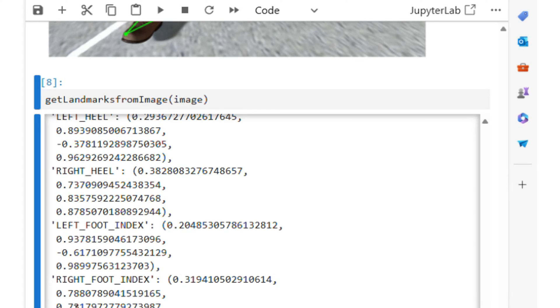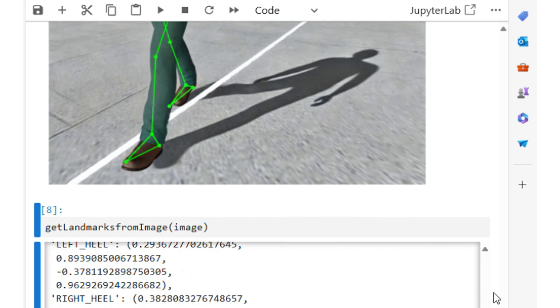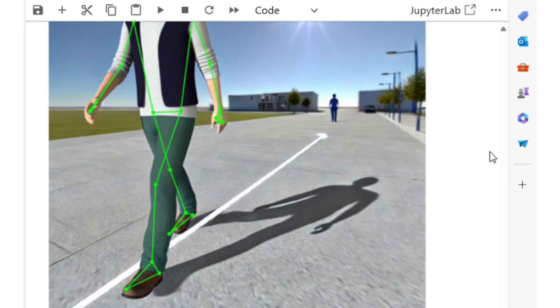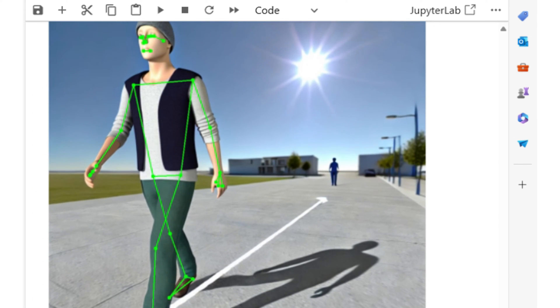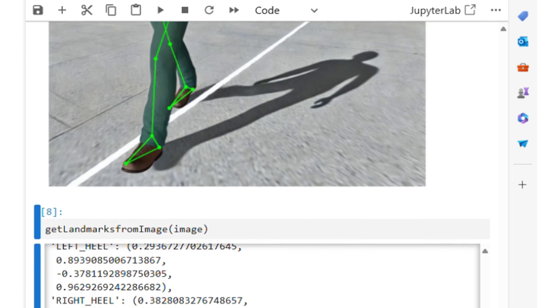The smaller the z value, the closer the landmark is to the camera. The magnitude of z uses roughly the same scale as x. The z values are usually normalized but not directly proportional to real world units like meters. Z can help understand the depth of the detected key points, which is useful for various applications like 3D pose estimation and augmented reality.